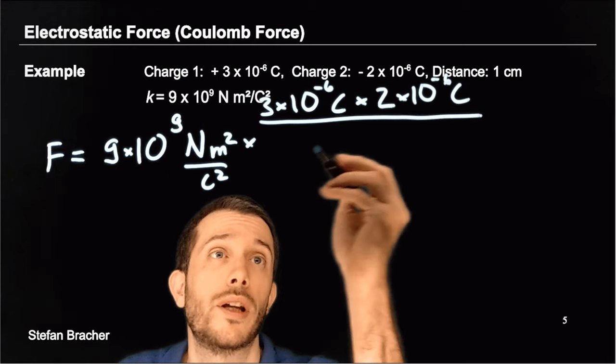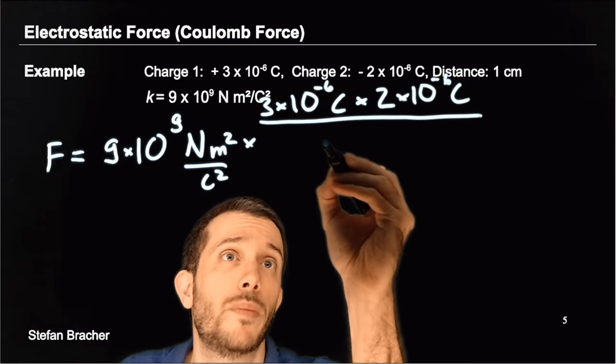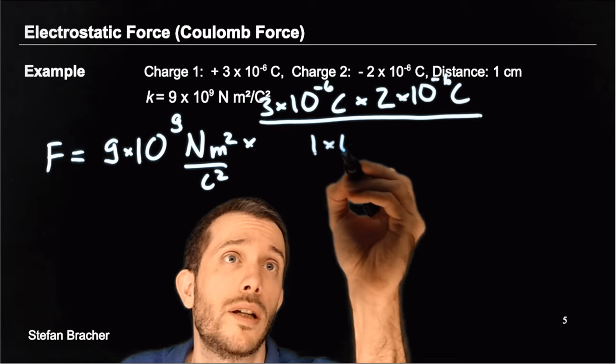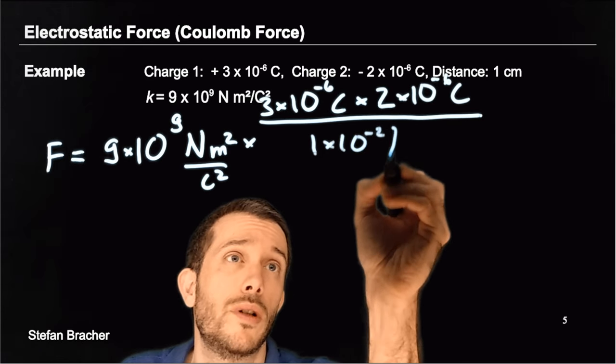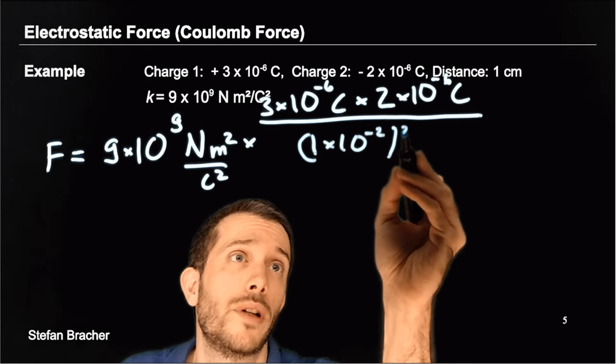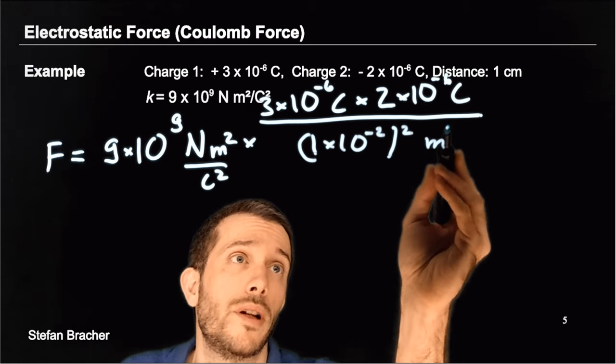Otherwise with this constant we wouldn't get newtons, so divide it by 1 times 10 to minus 2 meters, squared.